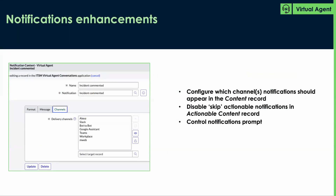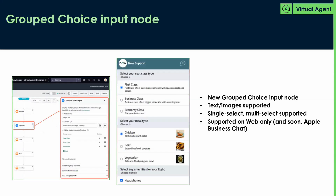Next we have notifications enhancements for virtual agent. You can now configure channel by channel where you want notifications to appear. You can disable the skip button in actual notifications, and you have the ability to control the notifications prompt that users receive when notifications are about to appear — just more fine-tuned control. We also have a group choice input node — a new input node in the virtual designer where you can group up choices, supporting text and images, single select or multi-select. This is supported on web only in Utah, although support via Apple Business Chat is coming via a store release later this year.